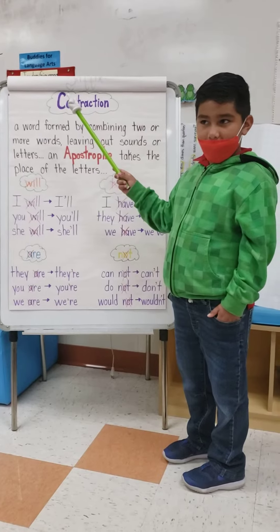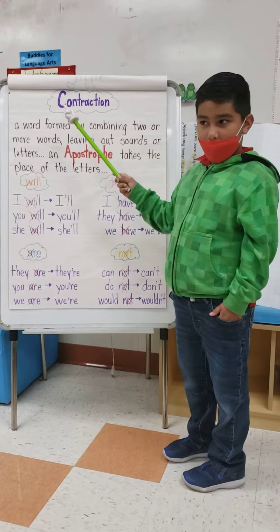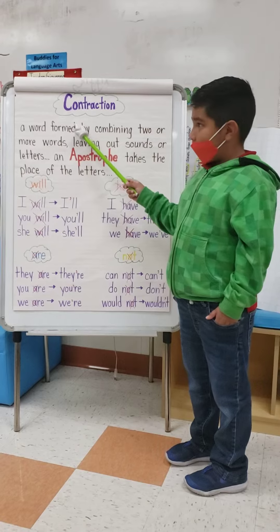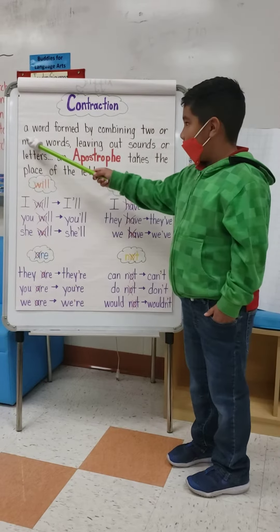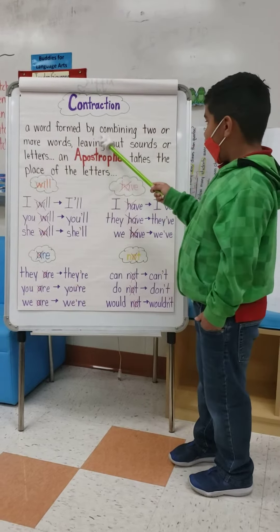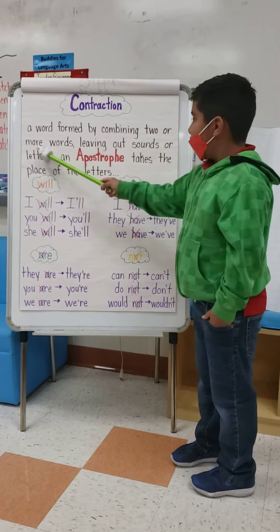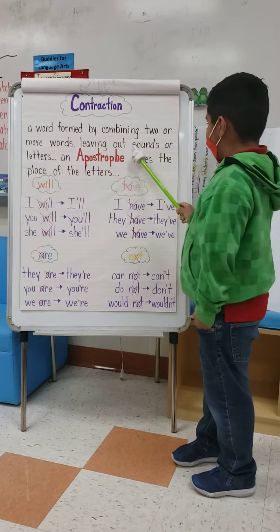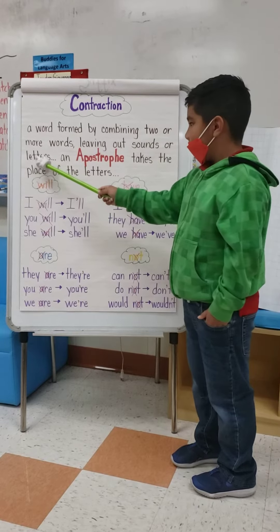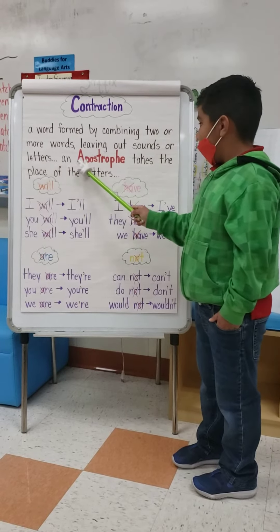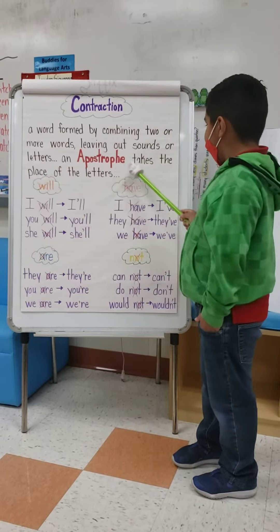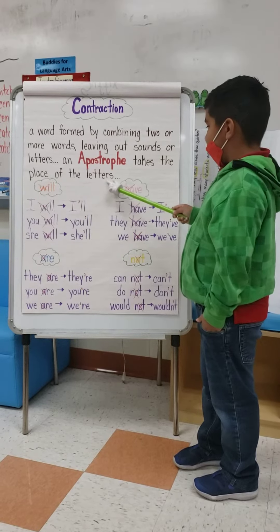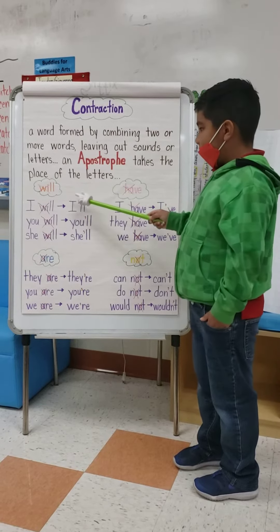Hello Bulldog Dolls, so today we're going to learn all about contractions. What is a contraction? A contraction is a word formed by combining two or more words, leaving out sounds or letters. An apostrophe takes the place of the letters. For example...